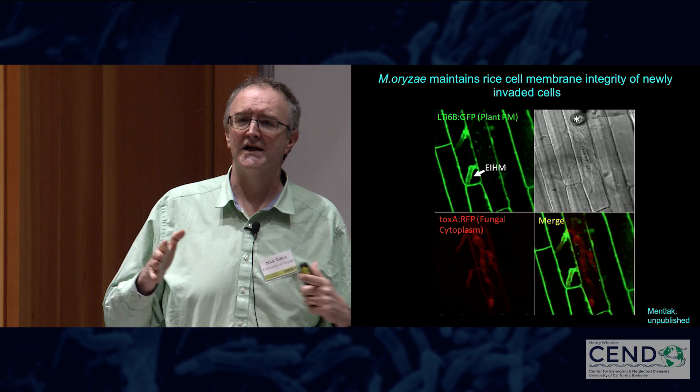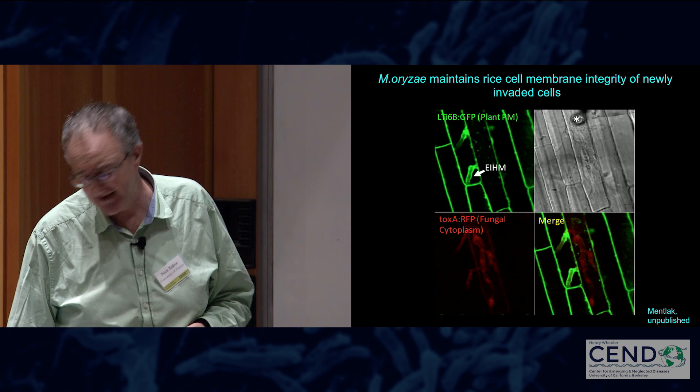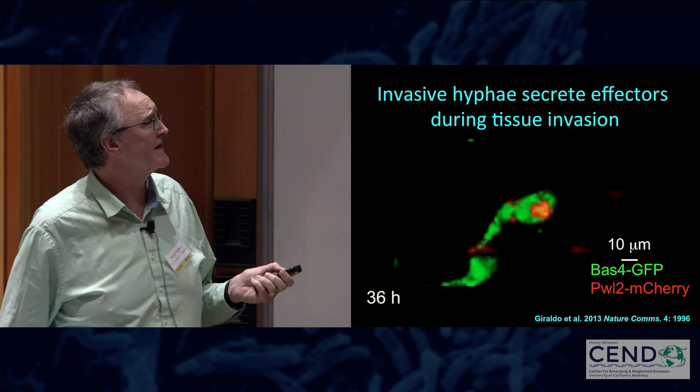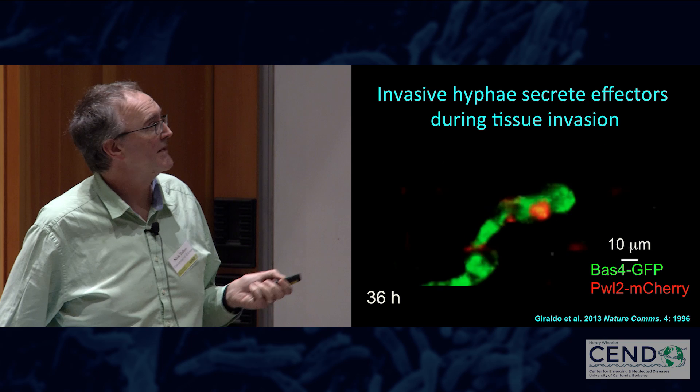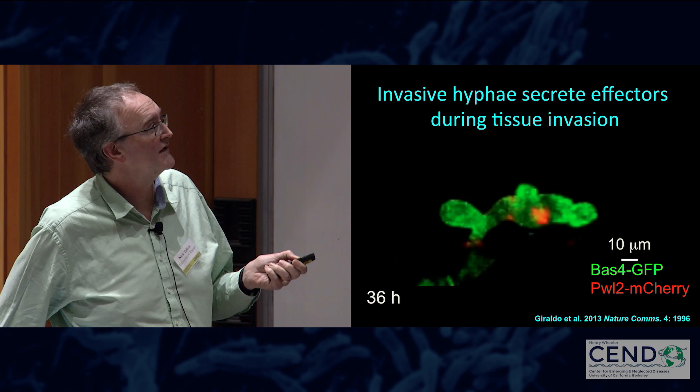The way the fungus maintains membrane integrity is by manipulating plasmodesmata and moving through pit fields. As Barbara mentioned, there are two different types of effectors: apoplastic effectors like the green effector BAS4, which is secreted from hyphal tips into the space between the fungal cell wall and the plant plasma membrane, and cytoplasmic effectors released through the BIC structure — the biotrophic interfacial complex — whose destination is the cytoplasm or different organelles within rice leaf cells.